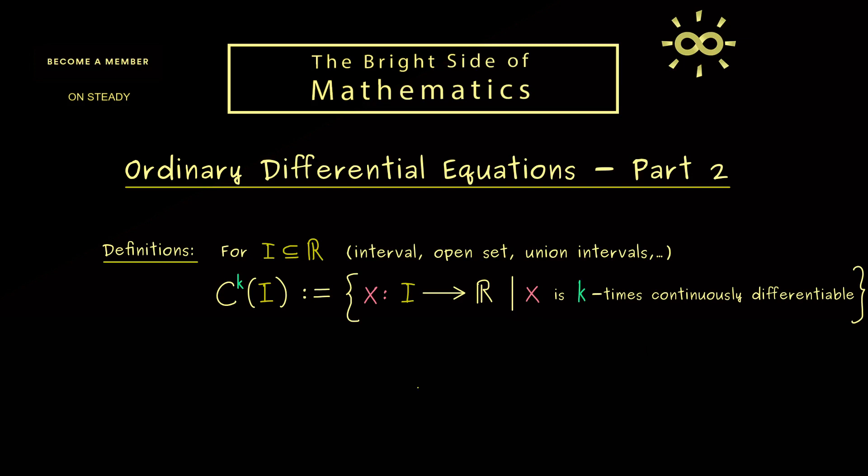Moreover, I should tell you here that the variable name we want to use for the function x is usually a lower case t. This means we will write x of t. I tell you that because if we choose the variable name as t we will use a dot for denoting derivatives. Hence, the first derivative here would be the function x dot. Then the second derivative would be x dot dot. And so on, and of course if we need too many dots we will use the common upper index notation.